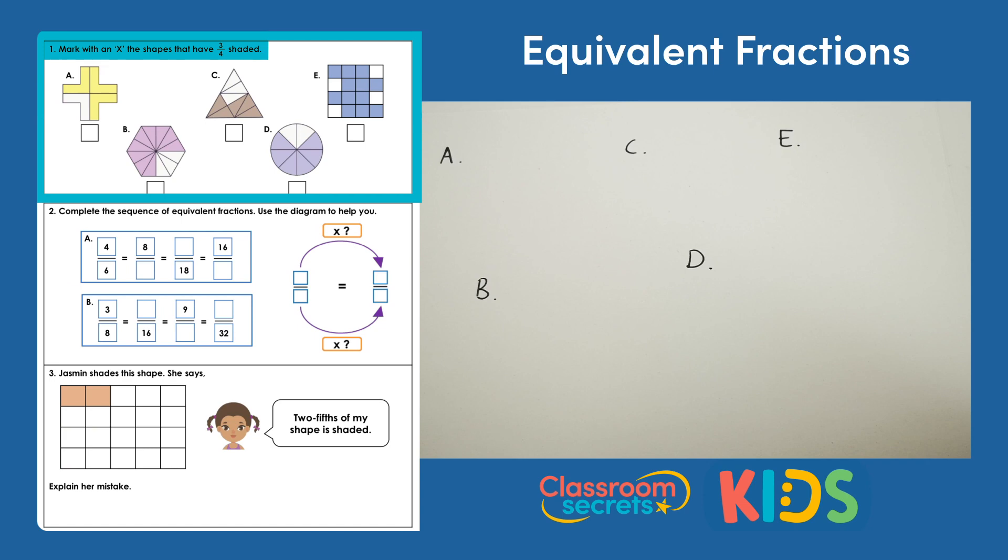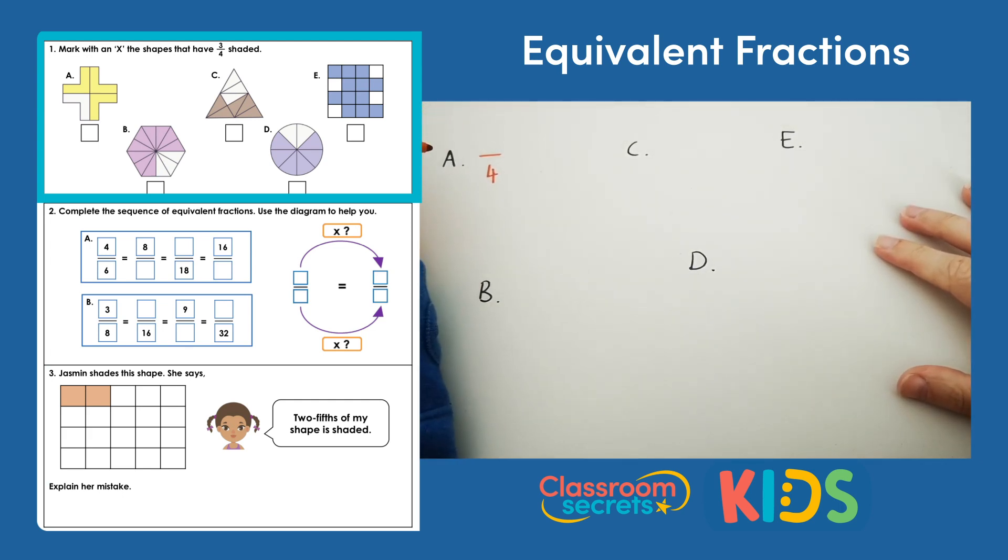Question one, mark with an X the shapes that have three quarters shaded. So what we need to do is look at the shapes, work out what fraction is being represented in them and work out whether or not this fraction is equivalent to three quarters. If we look at shape A, we can see shape A has been split into four parts and three of those parts have been shaded in yellow, so that means three is our numerator and four is our denominator. So shape A has three quarters shaded, so we can put an X in the box next to A.